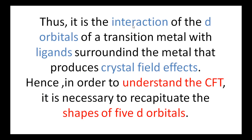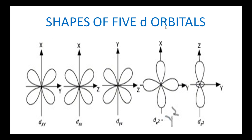Thus, it is the interaction of d-orbitals of the transition metal with ligands surrounding the metal that produces the crystal field effects. The d-orbitals of the metal interact with the ligand orbitals and produce crystal field effects. In order to understand CFT, it is necessary to recapitulate the shapes of the 5 d-orbitals. The 5 d-orbitals are: dxy, dxz, dyz, dx²−y², and dz².